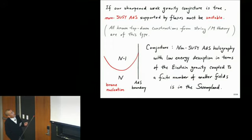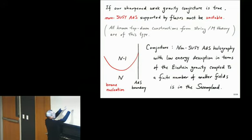One of the consequences is that if you admit that sharpened version of the weak gravity conjecture, then any non-supersymmetric AdS supported by flux must be unstable. In fact, all non-top-down constructions from string theory or M-theory are of this type. So I'll be arguing that all these examples are unstable. The reason is that if you have such brane, and if you have AdS supported by flux, you can nucleate brane carrying exactly the kind of mass, tension, and charge satisfying this inequality, and that would reduce the flux.